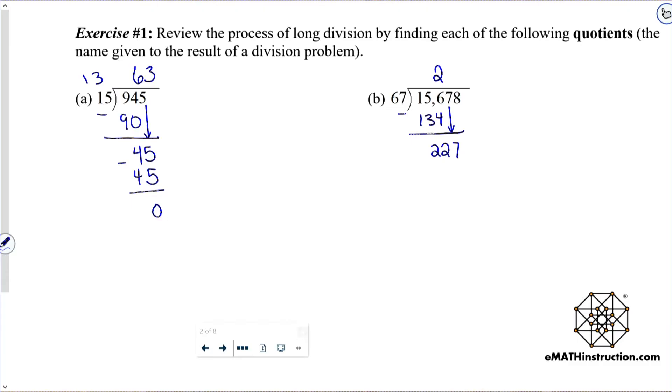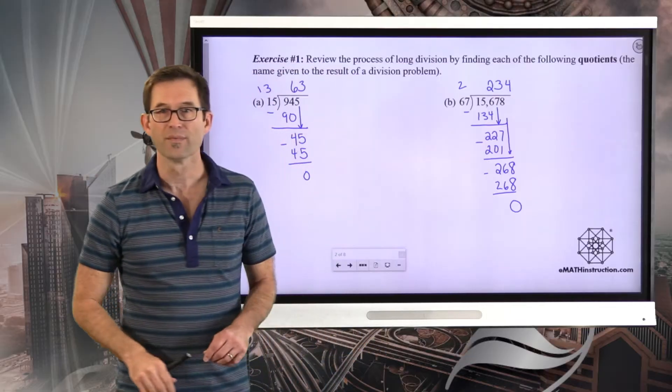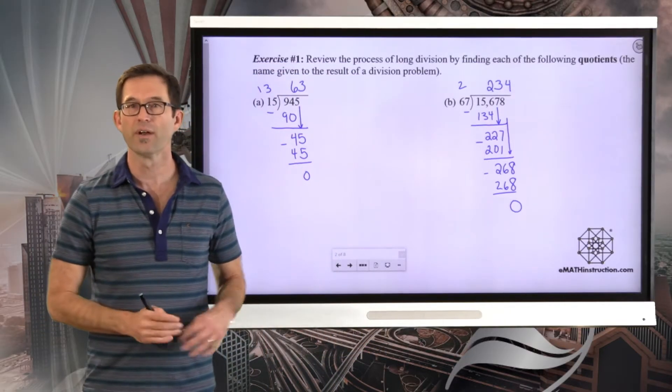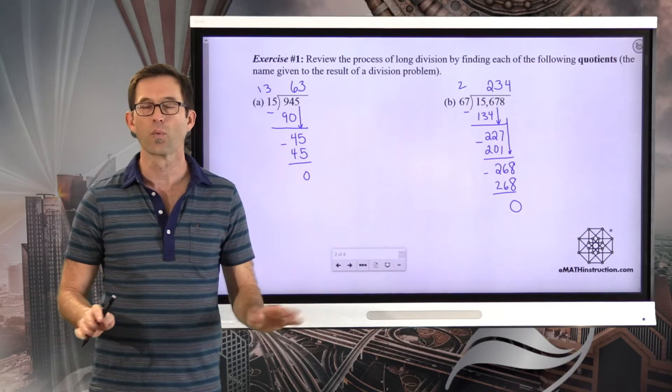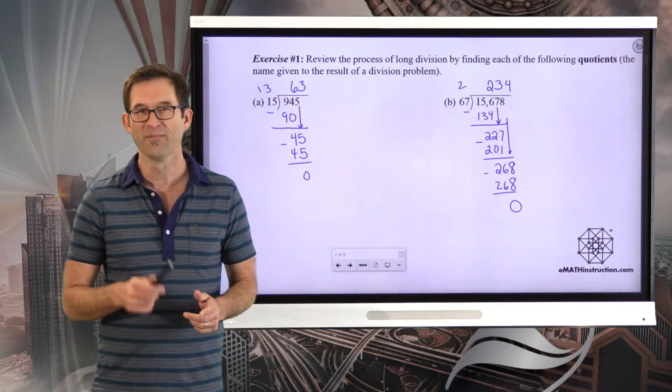Now I have to think about how many times 67 goes into 227. Let's try three this time. Three times seven is 21, three times six is 18 plus two is 20, so 201. I subtract and get 26. Bring that eight down to get 268. Maybe now four. Four times seven is 28, four times six is 24 plus two is 26, so 268. And as promised, a zero remainder. So hopefully you got 234 when you did that quotient. Both problems designed so that there were no remainders. We'll talk about them in a bit.